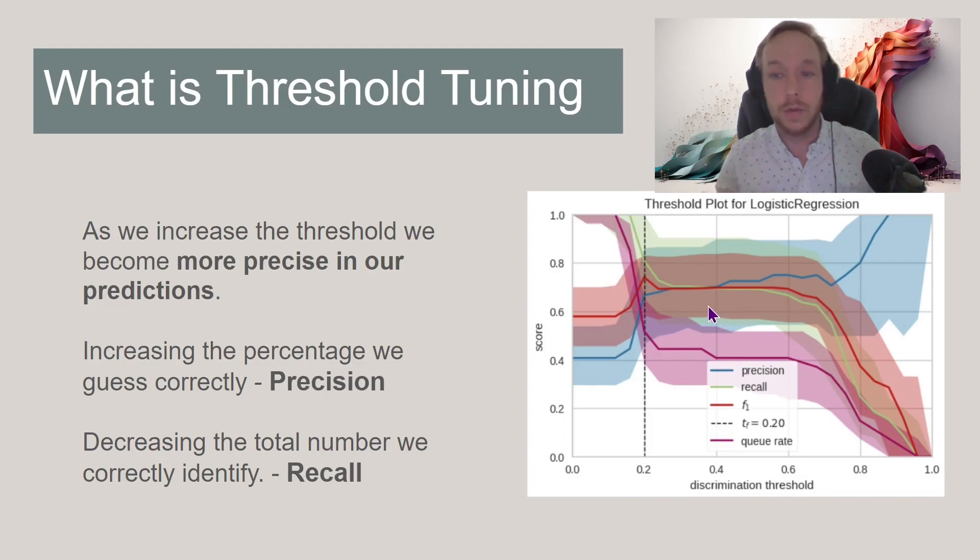Now that happens because you're going to be making less guesses. And so I always remember this as precision is how precise are my predictions, recall is recalling the truth. So how many of the true values did I actually recall? I took less guesses, I recalled less, I got less of them in all, but I was more confident about those predictions.